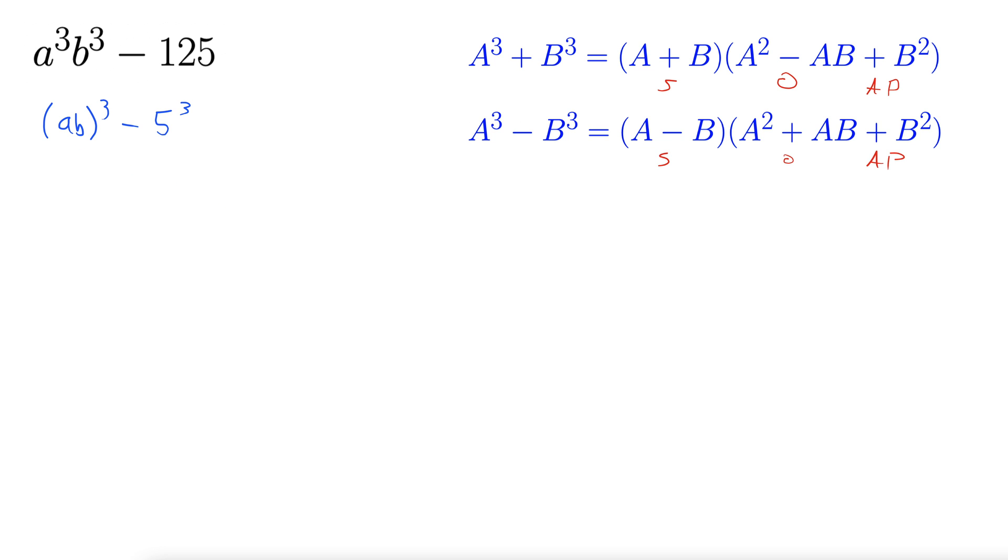Now it's a little bit easier to see that our ab is our big A and our 5 is our B.